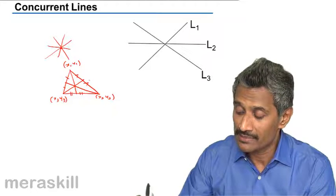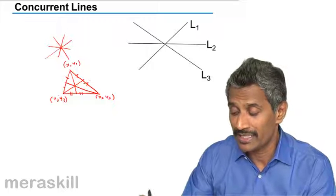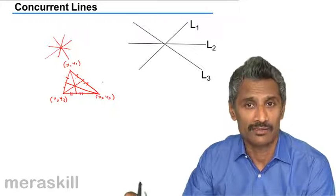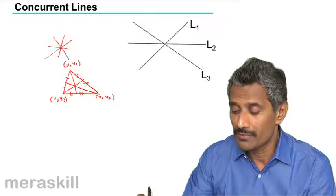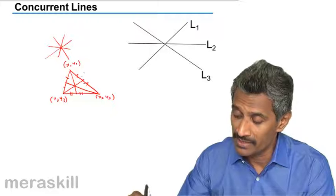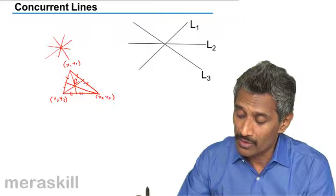So we have three segments or three lines intersecting at a single point. Then we call these lines concurrent lines. So in any triangle, the medians are concurrent, that means all three medians pass through a single point or they intersect at a single point.